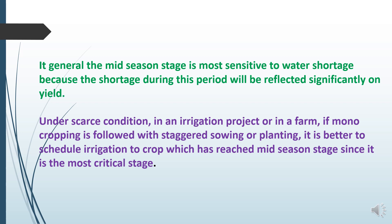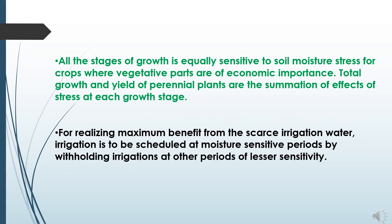Under scarce conditions in an irrigation project or on a farm, if monocropping is followed with staggered sowing or planting, it is better to schedule irrigation to the crop which has reached the mid-season stage. As water requirement is concerned, all stages of growth are equally sensitive to soil moisture stress for crops where vegetative parts are of economic importance.